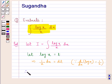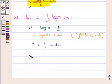Therefore, we get I is equal to integral of t dt. Since we know that log x is t and 1 upon x dx is dt. So now integrating further,